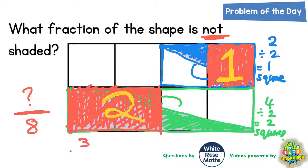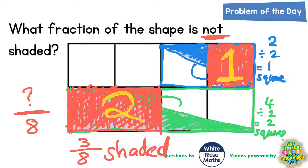So that is three out of eight which is shaded, but the original question is what is the fraction that is not shaded. So if three out of eight are shaded, then to get that up to the whole shape, that must be five out of eight which are not shaded. My final answer is five out of eight.